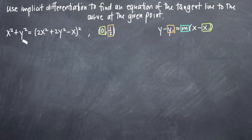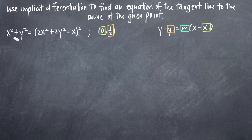Remember that when we're talking about implicit differentiation, we're talking about taking the derivative of this equation with respect to x. That's important because when we deal with terms that have only x involved, we don't have to worry. For example, the derivative of x² with respect to x is just 2x — no problem. But when we take the derivative of something like y², we have to use chain rule and multiply by y prime because we have to treat y as a function.